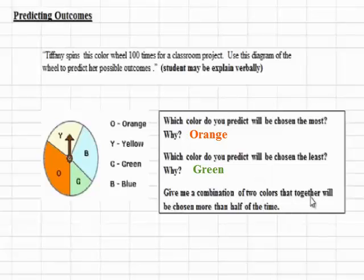The third question asks us to give a combination of two colors that together will be chosen more than half of the time. Basically, what we're doing is we're looking for two colors that when we put them together, they'll create a piece that's bigger than half of the circle.